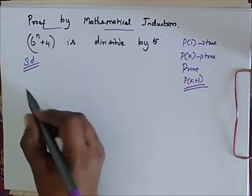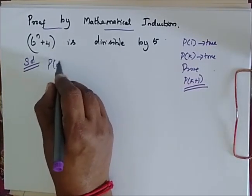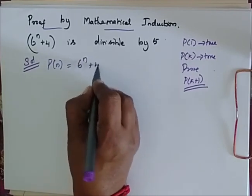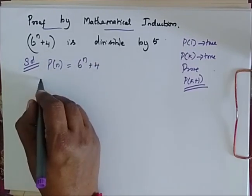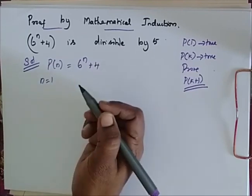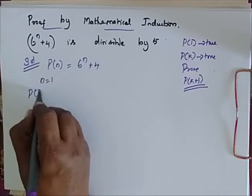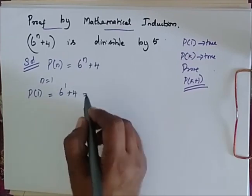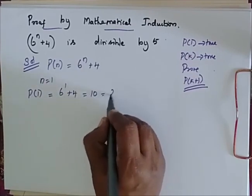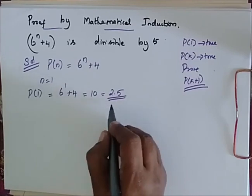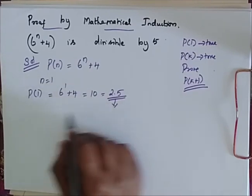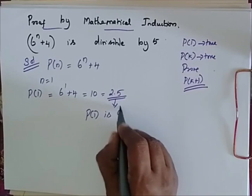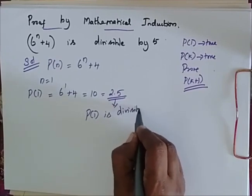Let me enter into the solution. Let my P of n be 6 power n plus 4. Now, for n is equal to 1, my P of 1 is equal to 6 power 1 plus 4, which is equal to 10, which is equal to 2 into 5. So it is a multiple of 5. Therefore, P of 1 is divisible by 5.